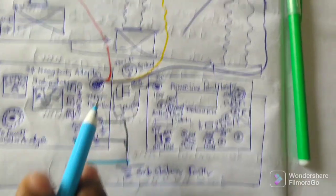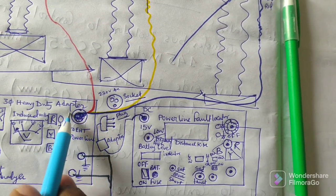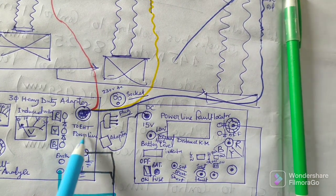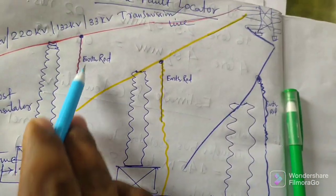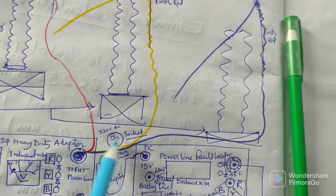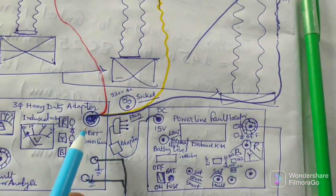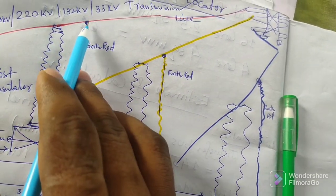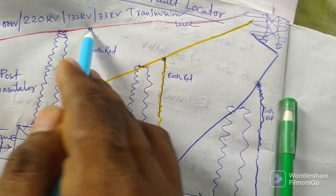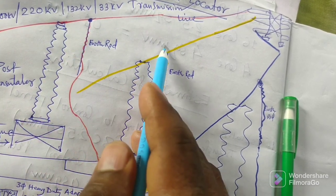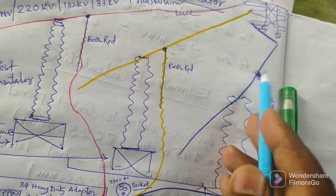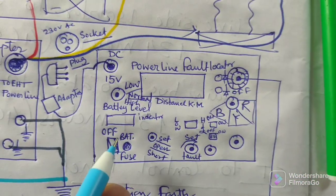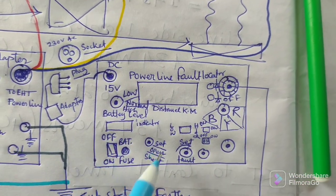This is the connection of the fault locator to the three-phase heavy-duty adapter. The adapter will be connected to the EHT power line — red will be connected to the red phase, yellow to the yellow phase, and blue to the blue phase. This is the earth rod with wrapped wire, which will be connected to the HT conductors. After the HT conductor connections are properly attached, you are ready to proceed.